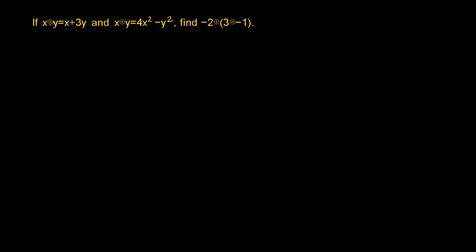If x—the operator here is x with a circle around it, we'll call it circle x. If x circle xy equals x plus 3y, and x circle plus y—a different operator we're defining—equals 4x squared minus y squared.